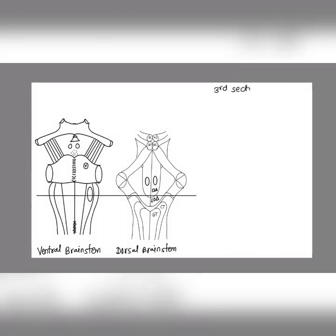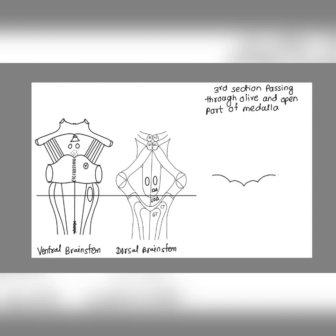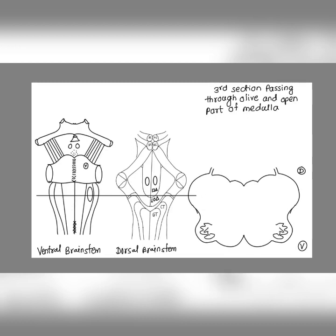The third section passes through the olive and at the same time, posteriorly, it passes through the open part of the medulla. Note here we are having hypoglossal and vagal triangles — first there is a hypoglossal triangle, and lateral to it there is a vagal triangle. More laterally we are having inferior cerebellar peduncles, and on the ventral aspect we are able to see the olive as well as the pyramid.